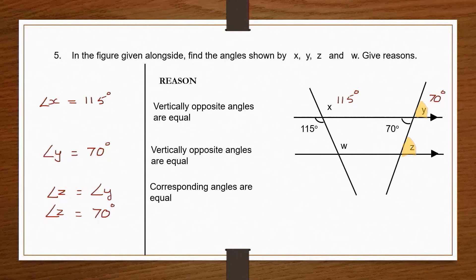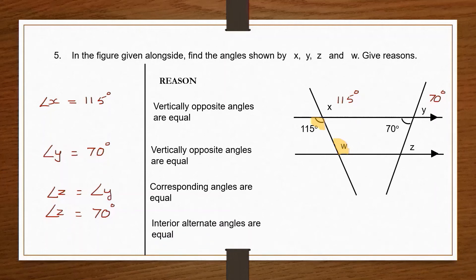Now let's find angle W. Angle W and angle X are corresponding angles. Taking the other relationship, angle W and 115 degrees are interior alternate angles. Therefore angle W equals 115 degrees because they are interior alternate angles.